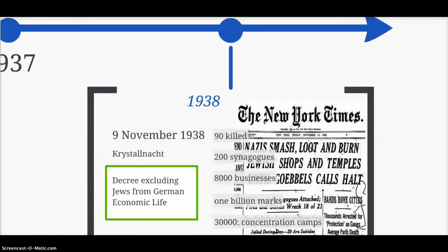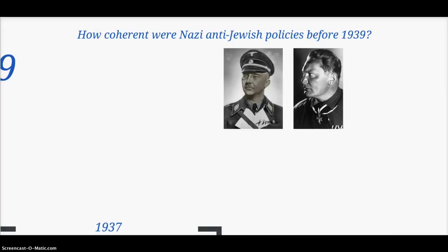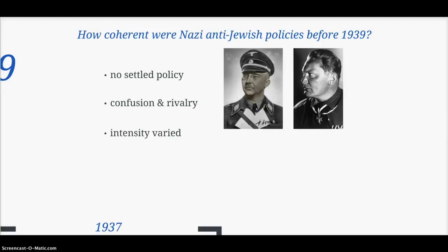How coordinated were the Nazi anti-Jewish policies before 1939? In fact, there wasn't a settled policy. You've seen slightly different policies among rivals — Himmler, Goebbels, and Göring — resulting in confusion and rivalry. The intensity also varied, with moments of intense persecution — for example in 1935 and 1938 — and lulls in between.